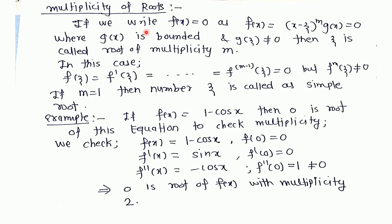After defining the root, our aim is to understand multiplicity of roots. If we write f(x) = 0 as f(x) = (x - ξ)^m * g(x) = 0, where g(ξ) is bounded and g(ξ) ≠ 0, meaning ξ is not a root of g(x), then ξ is called a root of multiplicity m. Please note this definition of multiplicity.